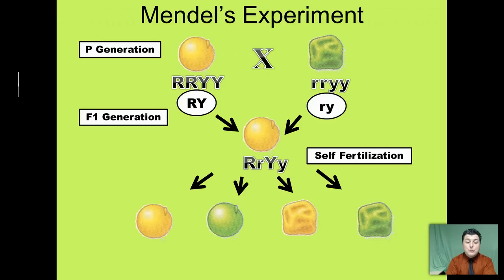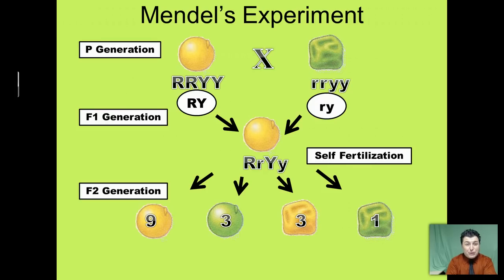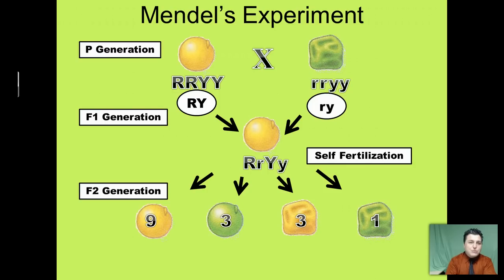So we have our F2 generation, and something interesting occurred. We had nine that were yellow and round, but then three that were green and round — a variety we had not yet seen before. We had three that were yellow and wrinkled — yet another variety never seen before. And then one that was our totally recessive green and wrinkled. So we have these brand new varieties, these new combinations that seemed to have arisen.